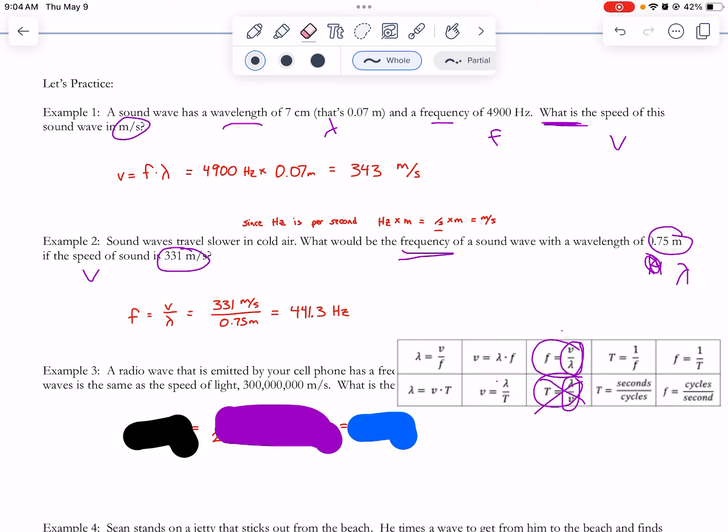And I got 441.3 Hertz. Hertz is the unit for f. The meters cancel out and I'm left with the per second, so that's the Hertz right there. Okay.